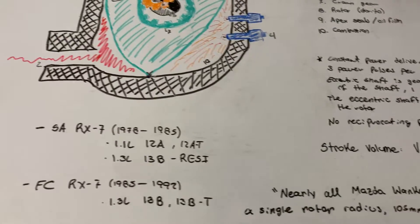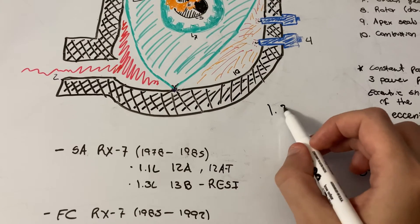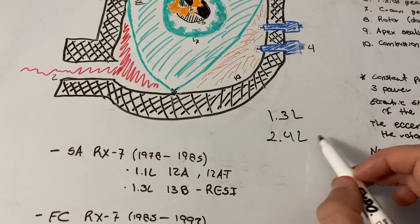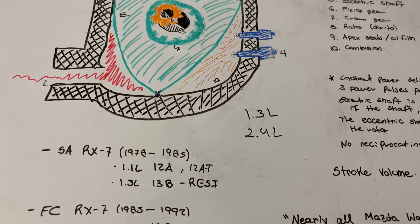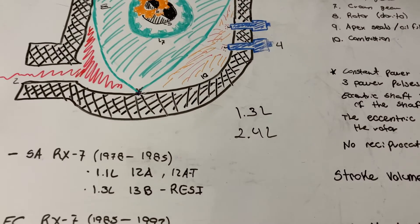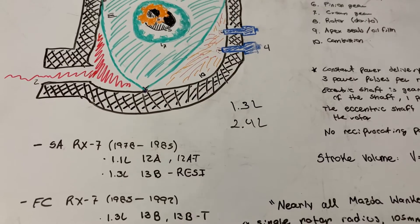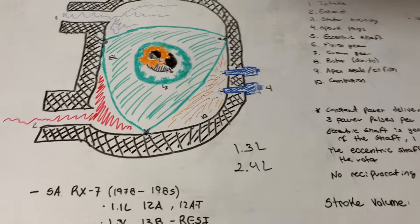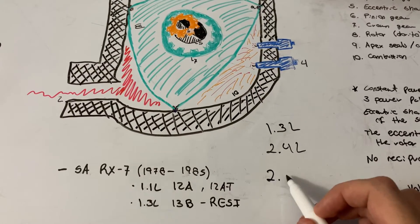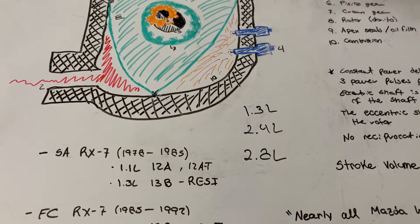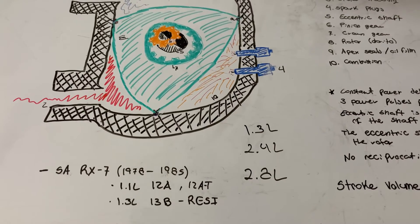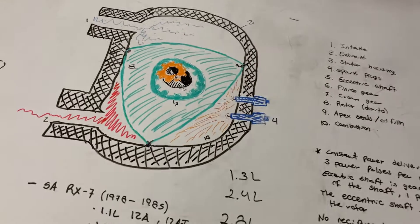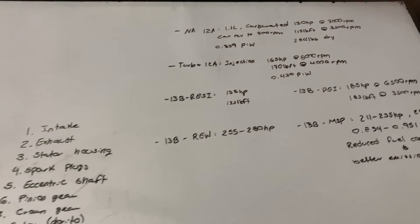People will often say that to get the same power of a 1.3-liter Wankel engine you need like a 2.4-liter piston engine, and it's true. A lot of quote-unquote haters will say 'no, you should calculate for the three phases,' and then when you do that you find out the actual displacement is 2.8 liters — but that's just finding excuses.